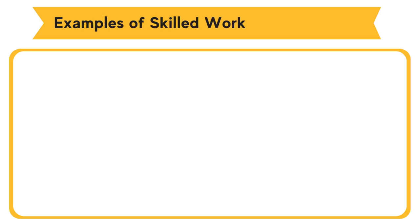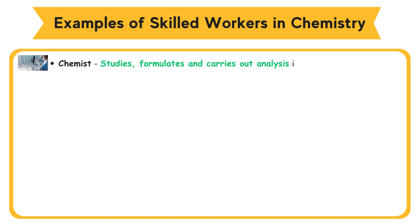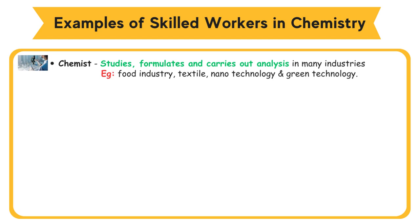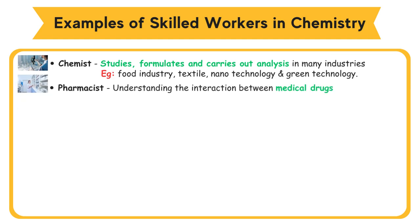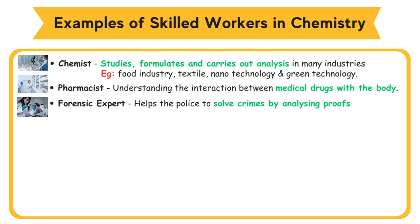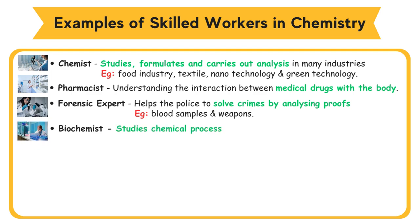Examples of skilled workers in chemistry. A chemist studies, formulates, and carries out analysis in many industries, like food industry, textile, nanotechnology, and green technology. A pharmacist understands the interaction between medical drugs and the body. A forensic expert helps the police to solve crimes by analyzing proofs, like blood samples and weapons. A biochemist studies chemical processes in living organisms, such as those related to DNA and enzymes.